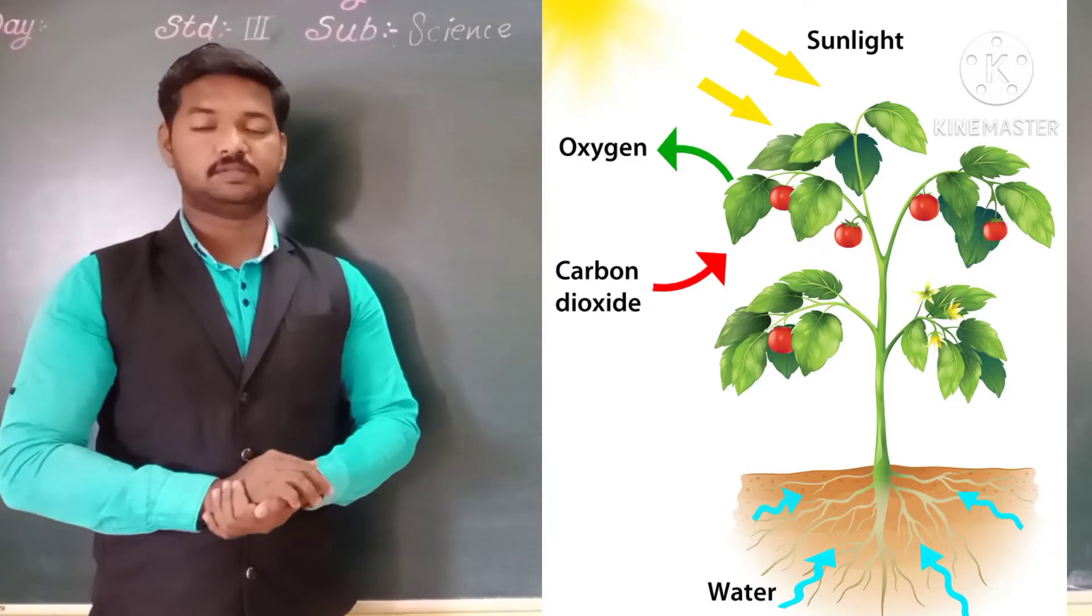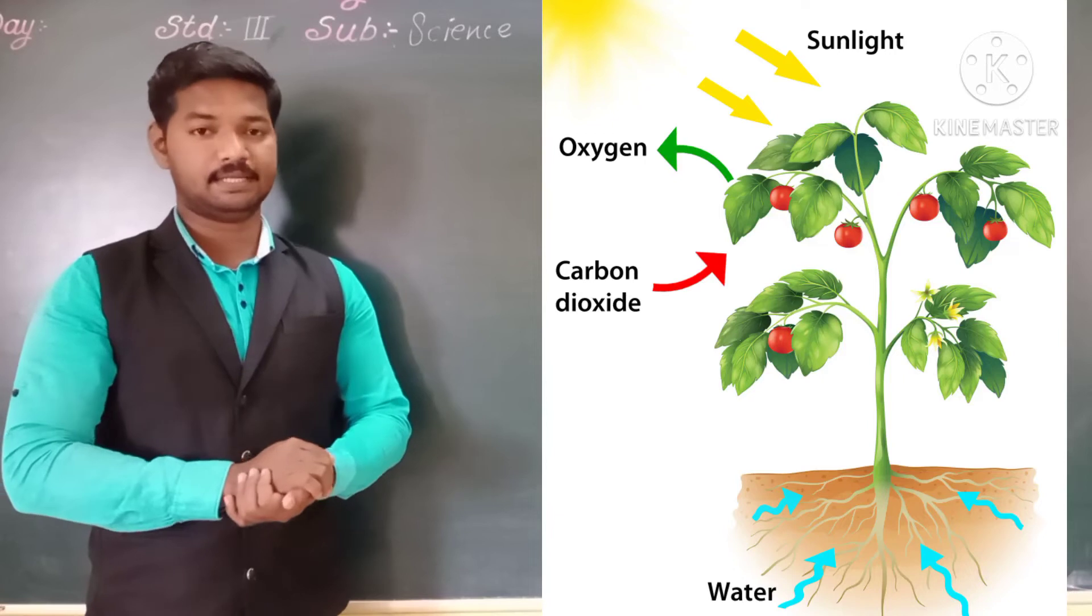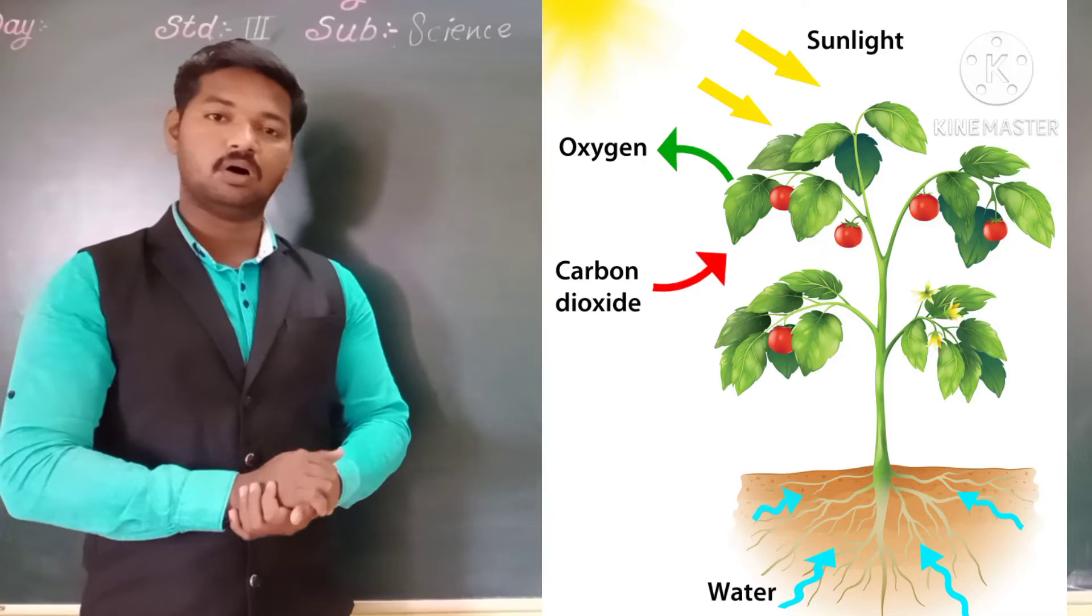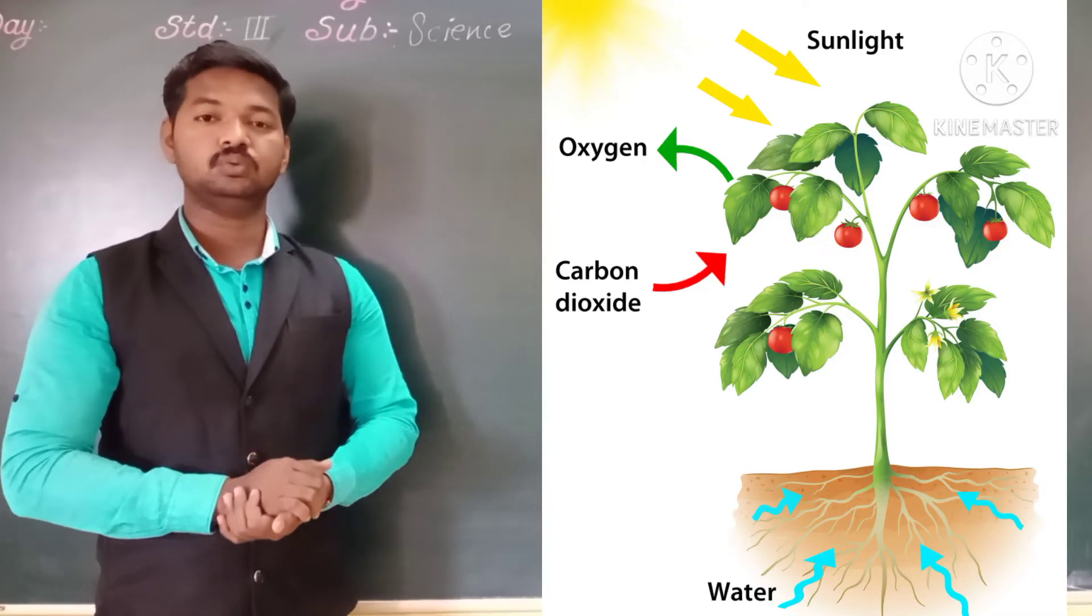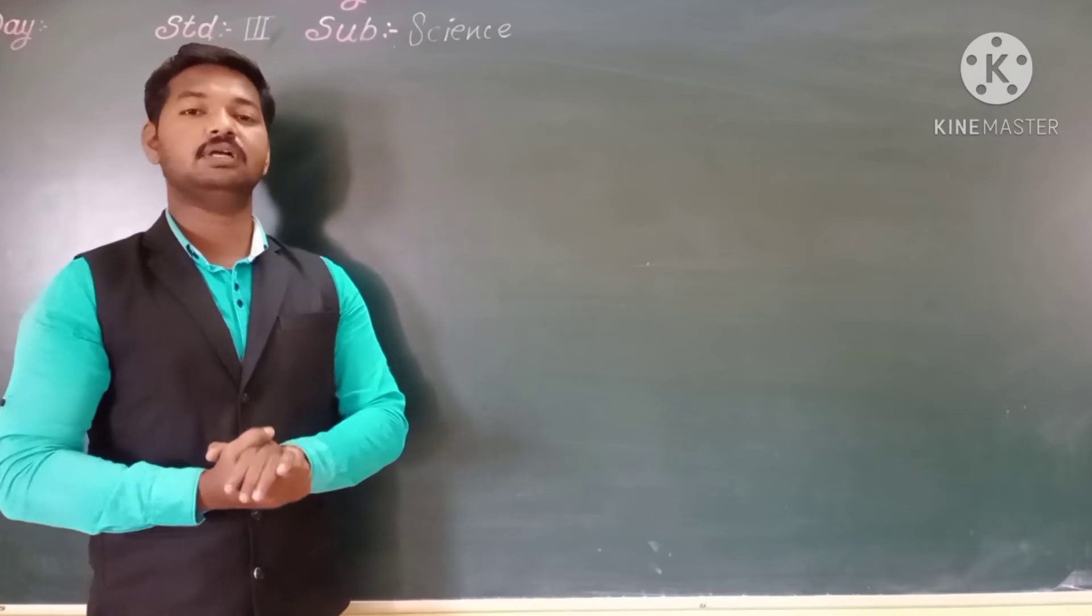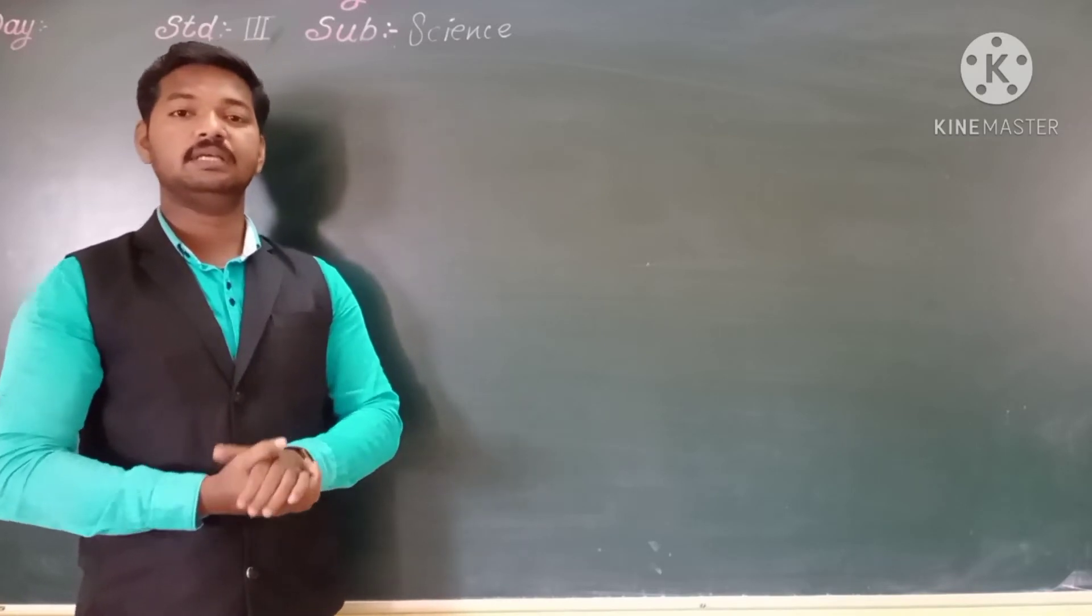During photosynthesis, leaves give out the gas that is oxygen. Oxygen is necessary for all other living things to survive. Oxygen is necessary for life that we get from the plant.